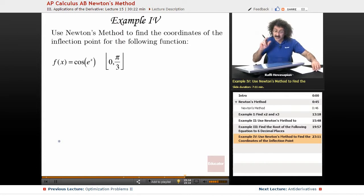Use Newton's Method to find the coordinates of the inflection point for the following function: f of x equals cosine e to the x on the interval from 0 to pi over 3.